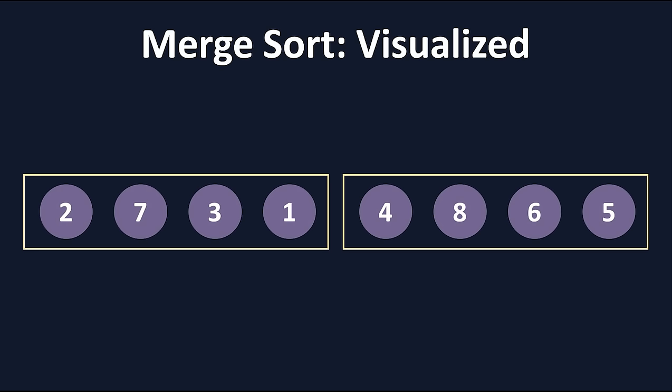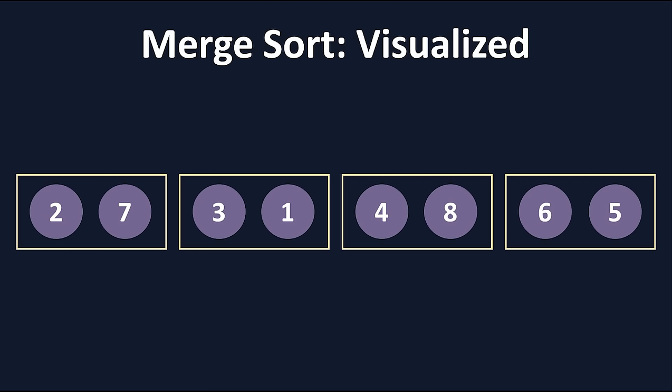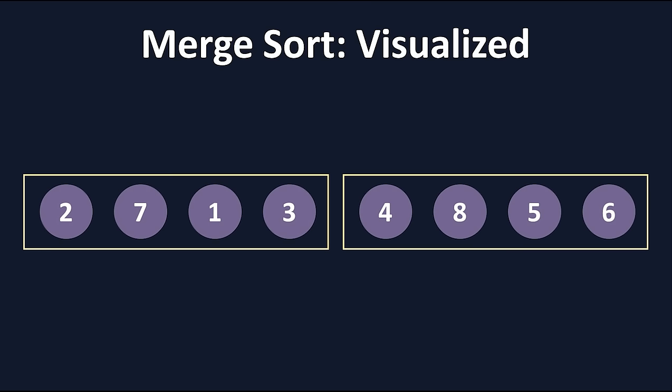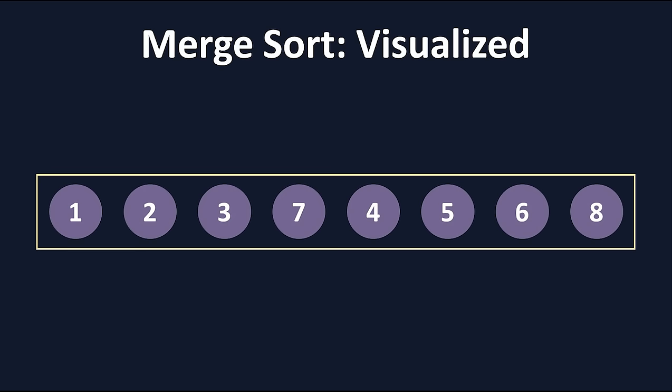We start by splitting the array in half, and we continue to split each subarray in half until the array has been split into pairs. Then, at the same time, each pair is going to do a comparison of the first element and the second element, and swap them if the second is greater than the first. Now we have sorted pairs. The next thing our algorithm does is combine two sets of pairs and do the exact same thing as before, sorting the numbers for each group of four. This process continues all the way back up until we reach the full array, which is now sorted.